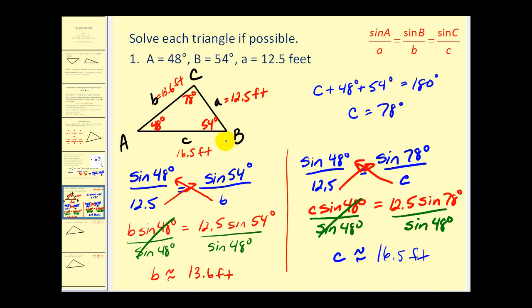Now one last check to make sure we didn't make a calculation error or misplace a decimal. The longest side should be opposite the largest angle. So here's our largest angle of 78 degrees. Sixteen point five feet is the longest side. And the shortest side of 12.5 should be opposite the smallest angle, which it is. So this is a nice way to double check our work one last time, to make sure we didn't make a mistake on the calculator to solve our right triangle.